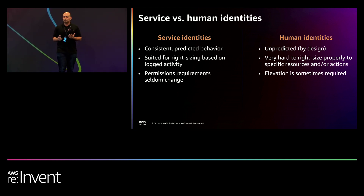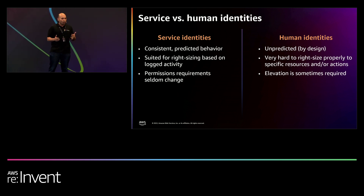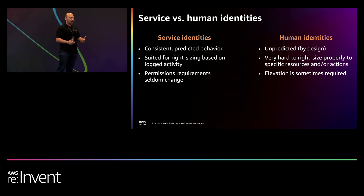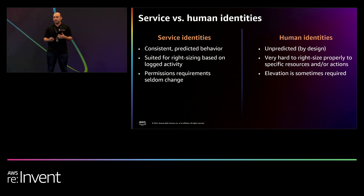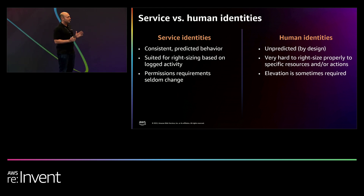When it comes to service identities, they're consistent and predictable. Hopefully, we know what the code they're running is supposed to be doing, and that's how we can somewhat — or even significantly — right-size the permissions that they get.